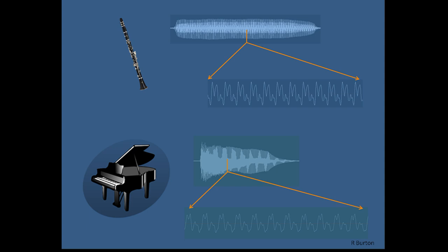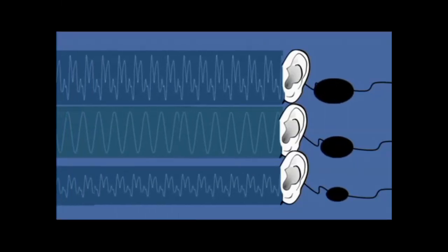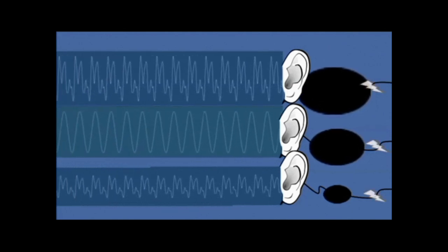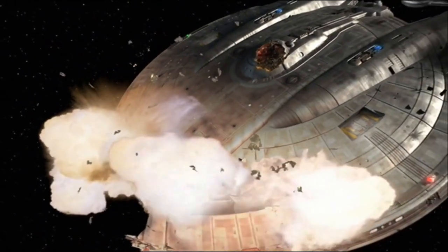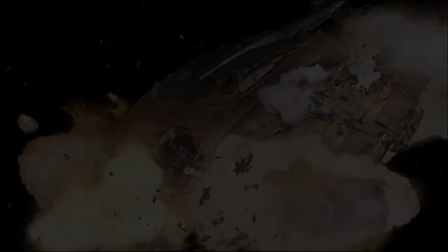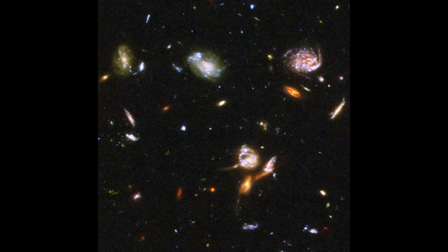You probably remember from science class that sound is just vibrations carried through the air. A physical object vibrates, which causes the air around it to vibrate, and that vibration is carried through the air all the way to your ears. Space is a vacuum, or darn near it — there's no air or other gases to speak of, thus no vibrations carried through the air, thus no sounds and no big explosions.